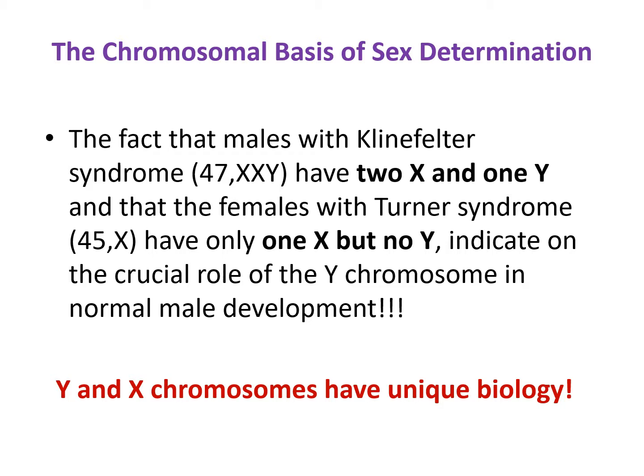The fact that males with Klinefelter syndrome — which is 47XXY — have two X chromosomes and one Y, and that females with Turner syndrome — which is 45X — have only one X, indicates the crucial role of the Y chromosome in normal male development.